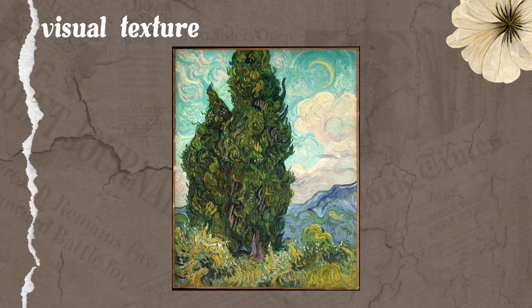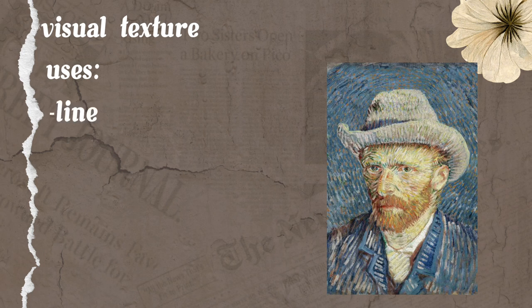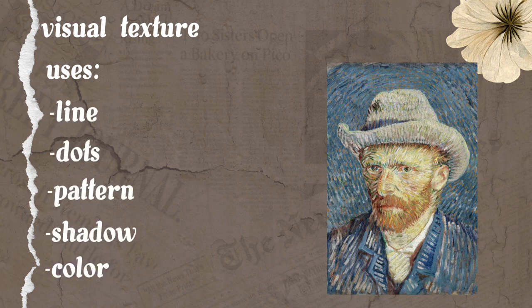Visual texture is not the actual texture. It uses line, dots, pattern, shadow, and color to create the desired effect and make the painting look real. But when you touch the surface of the canvas, it is still flat and smooth.